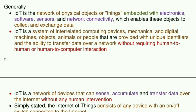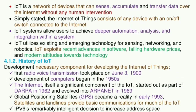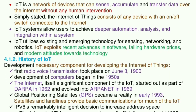IoT is a system of interrelated computing devices, mechanical and digital machines, objects, animals, or people that are provided with unique identifiers and the ability to transfer data over a network without requiring human-to-human or human-to-computer interaction. IoT is a network of devices that can sense, accumulate, and transfer data over the internet without any human intervention.